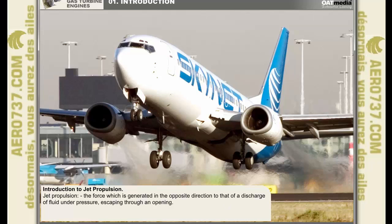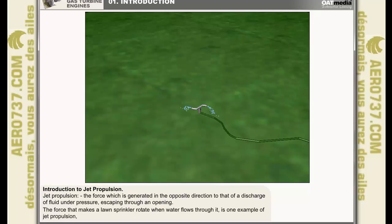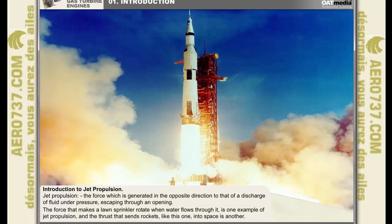Jet propulsion can be defined as the force generated in the opposite direction to that of a discharge of fluid under pressure escaping through an opening. The force that makes a lawn sprinkler like the one shown here rotate when water flows through it is one example of jet propulsion readily apparent in everyday life, and the thrust that sends rockets like this one into space is another, which is perhaps not such an everyday occurrence.